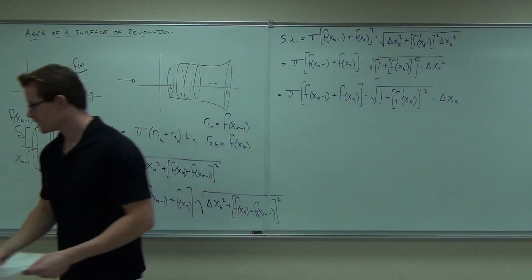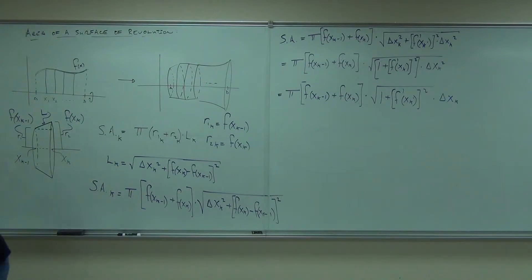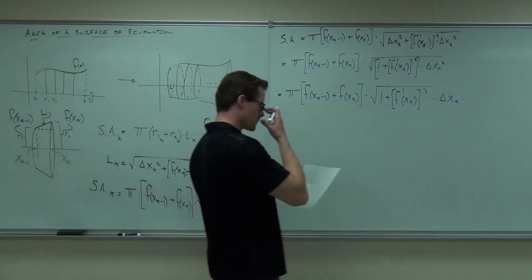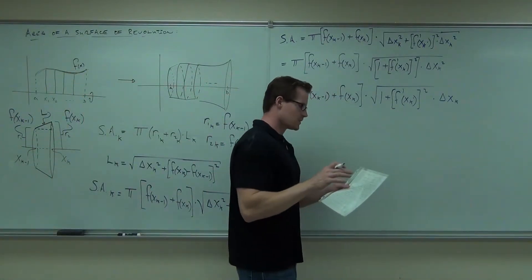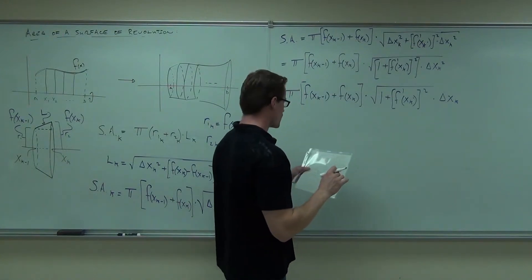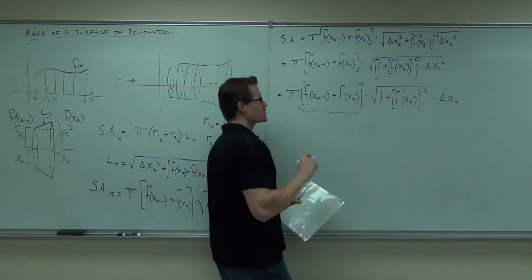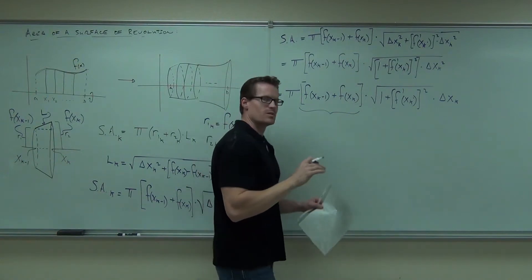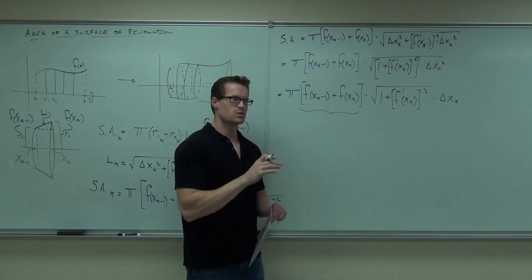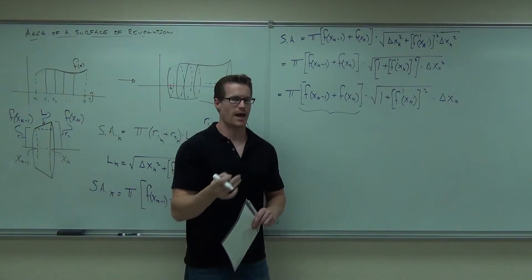We're almost done. Now, I'm going to be a little sneaky here. What I'm going to do is think about just this piece for a second. Now, just this piece, I'm going to manipulate it. I'm going to multiply by 2 and by 1 half.